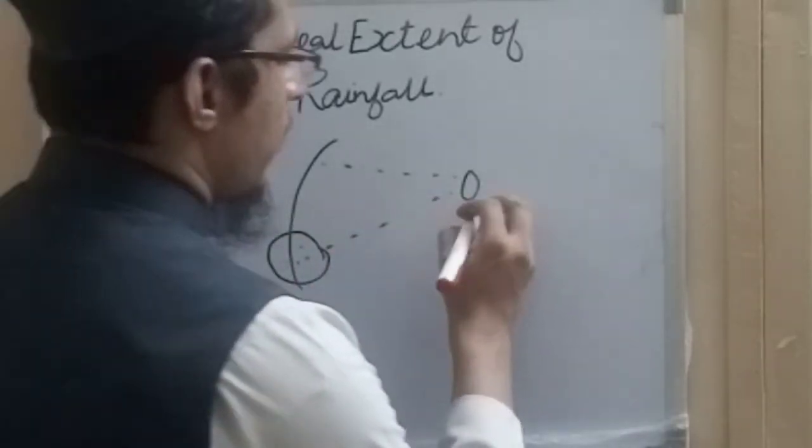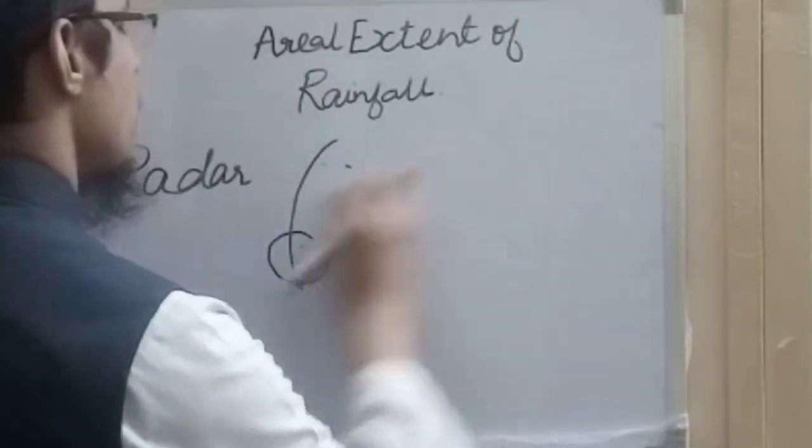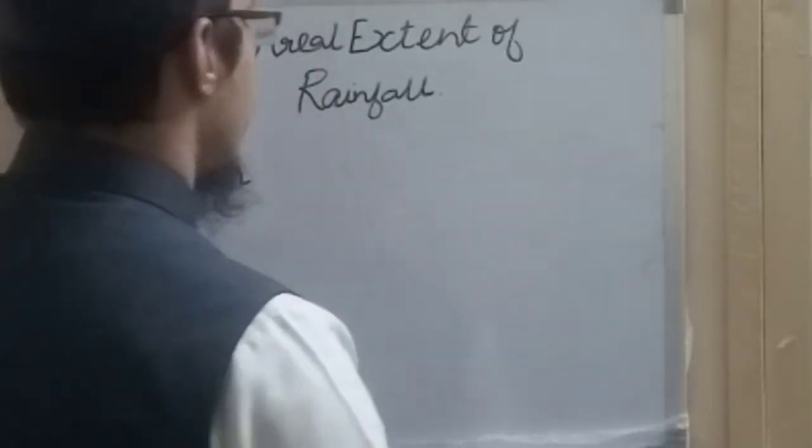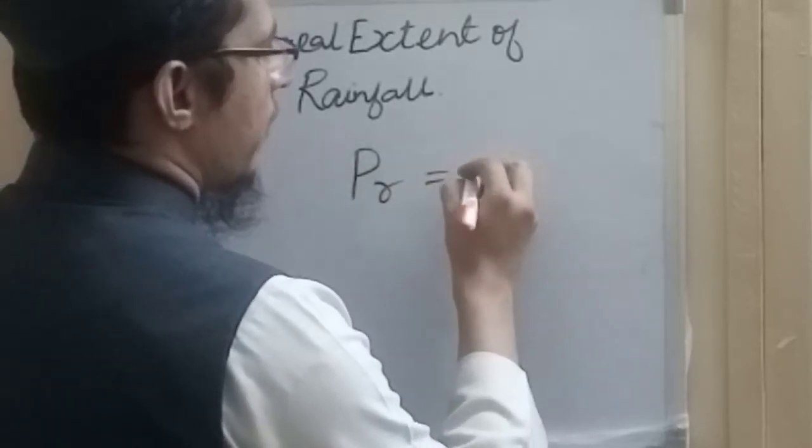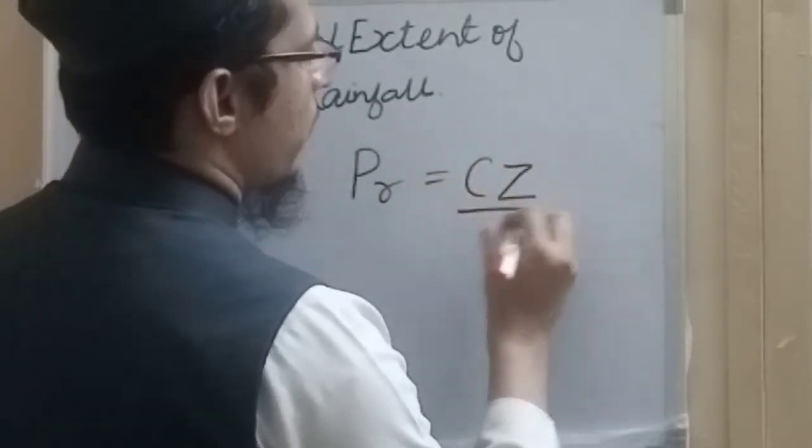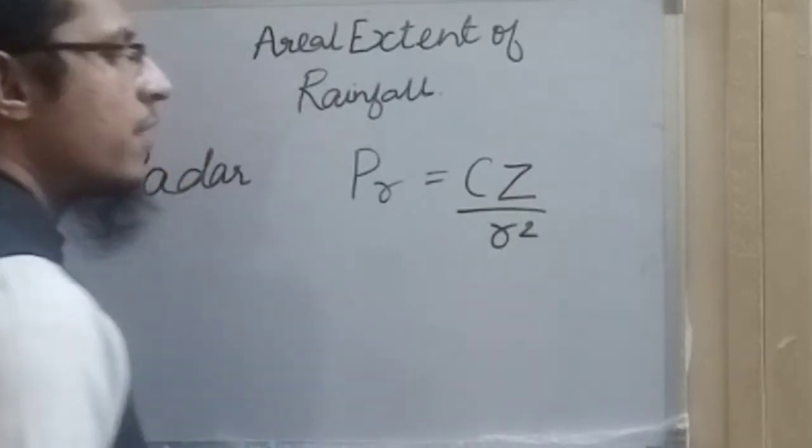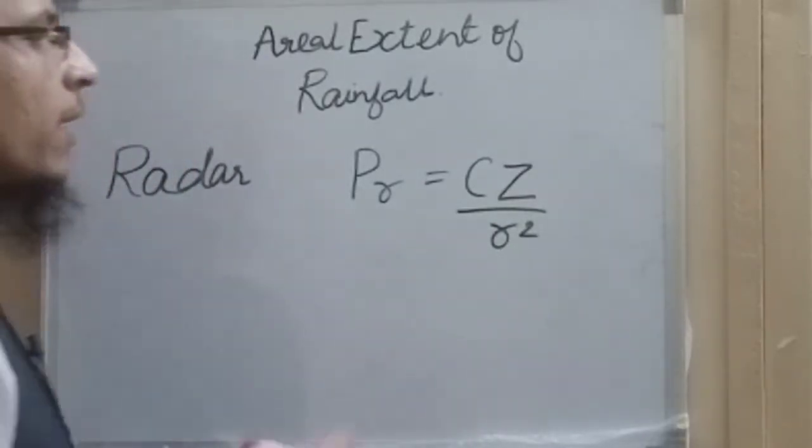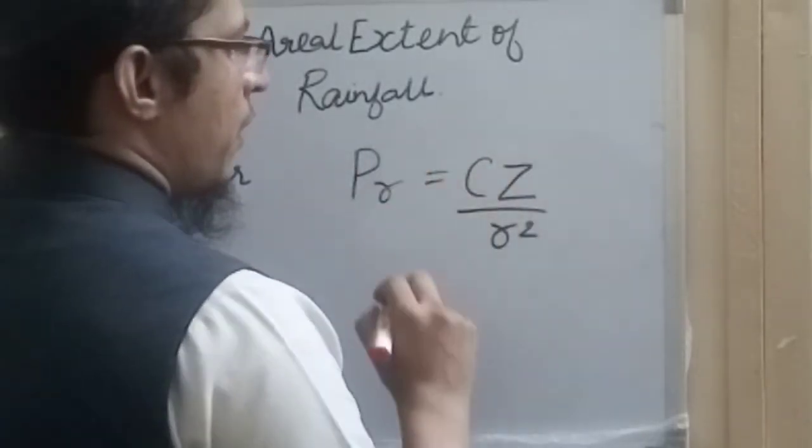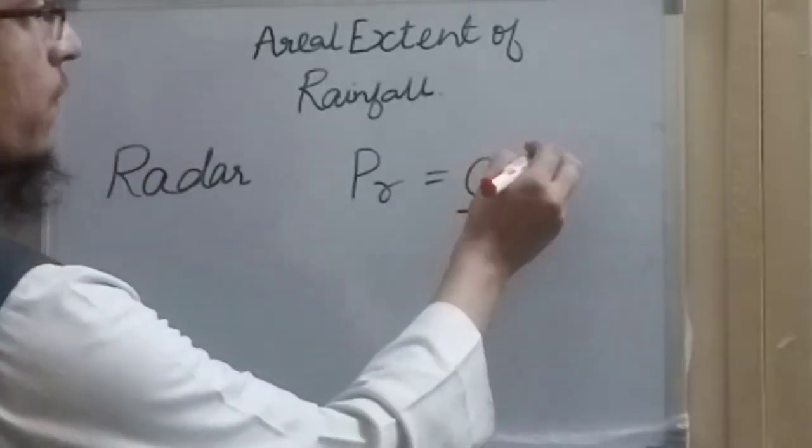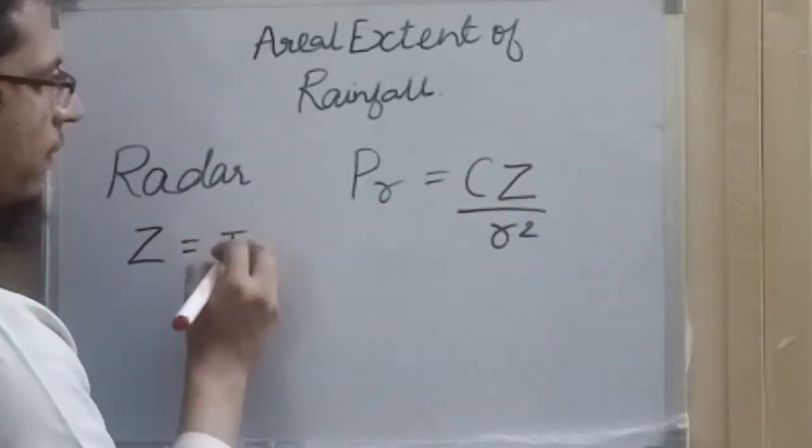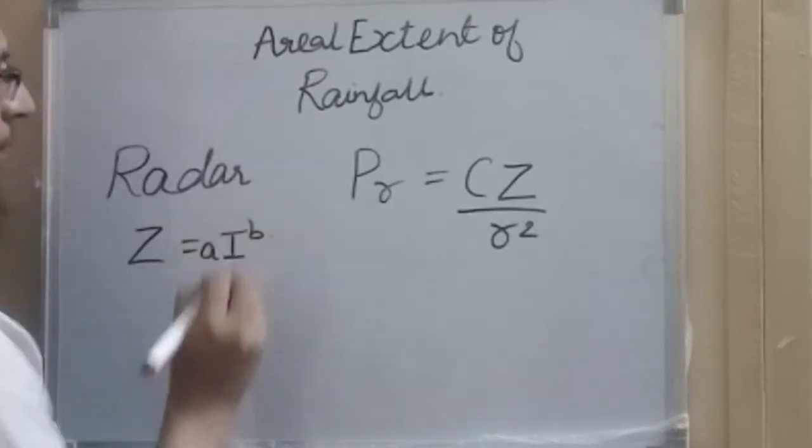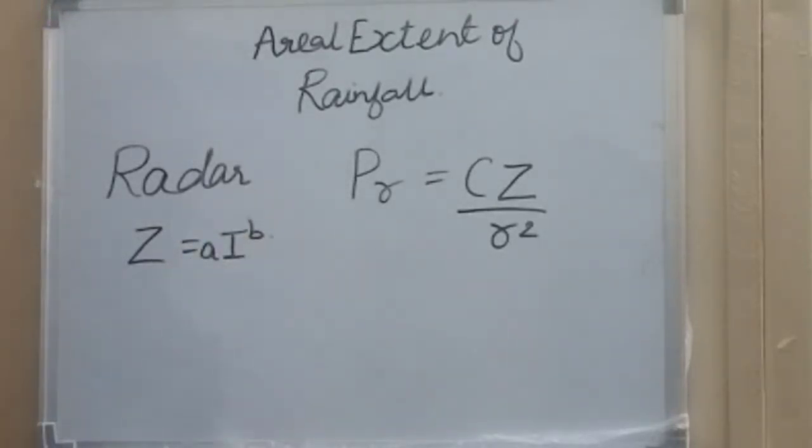We can say that the echo power, represented by Pr, is generally represented as CZ upon r squared, where r is the distance of the target volume and Z is the echo factor. This echo factor Z is directly proportional to the intensity of rainfall in the form Z equals a into I to the power b.